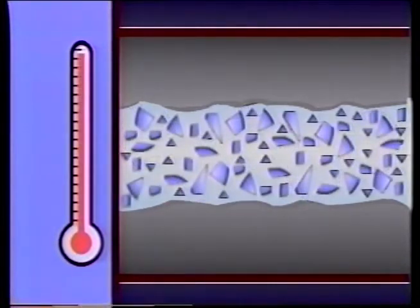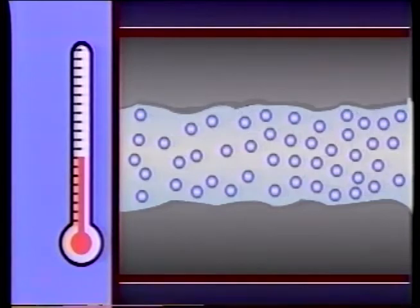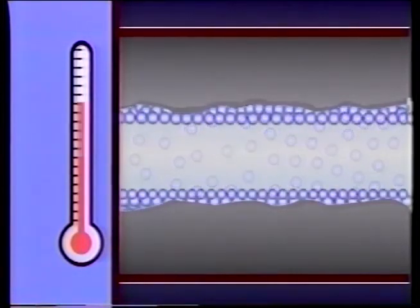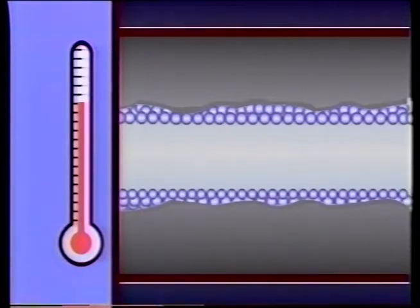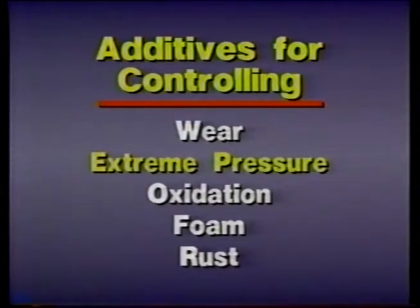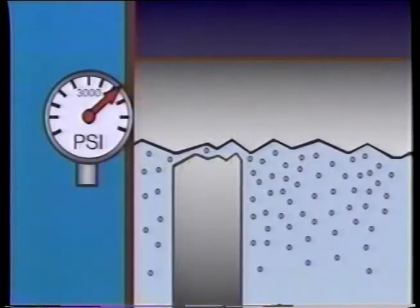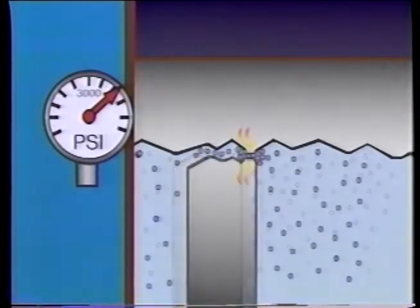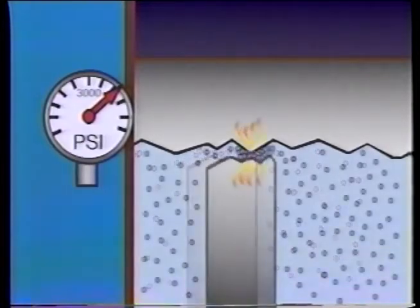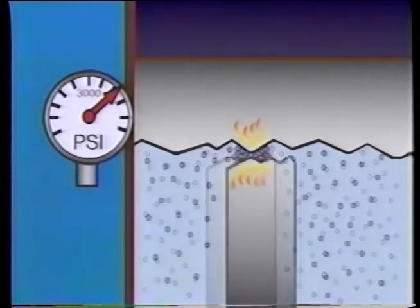To overcome this limitation, another type of anti-wear additive actually bonds with the metal as friction heats up the surfaces. The bonded molecules smooth out the surfaces and reduce wear. There are also additives made for systems that operate at extreme pressures, typically above 3,000 pounds per square inch. When systems operate at such high pressures, any surfaces which actually touch attempt to weld together. However, the high heat at these points activates the additive in the oil and keeps the surfaces apart.